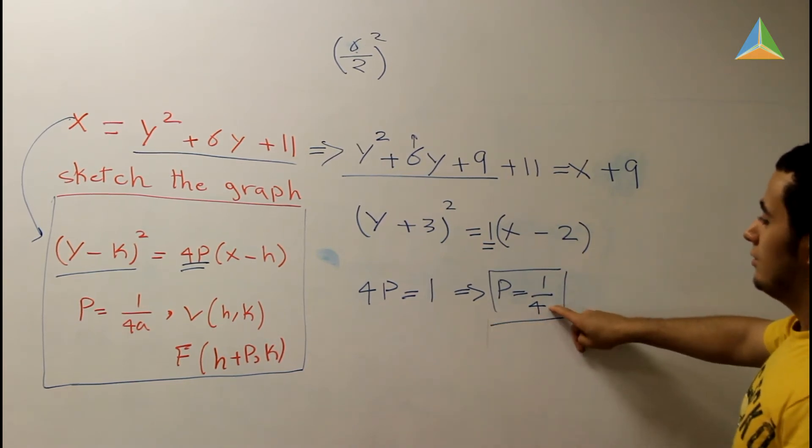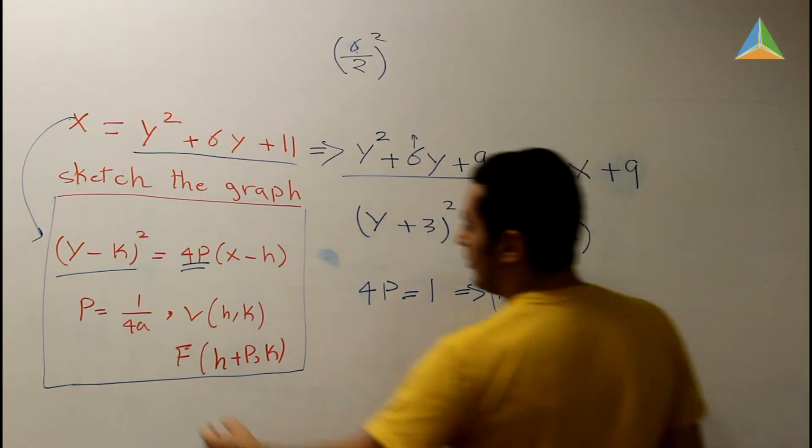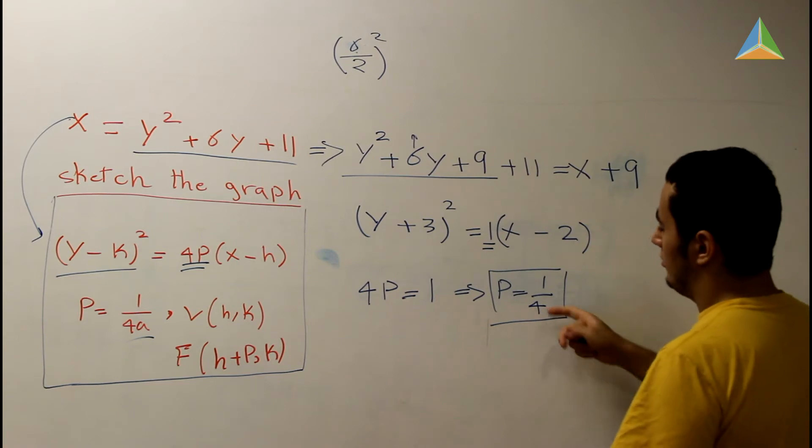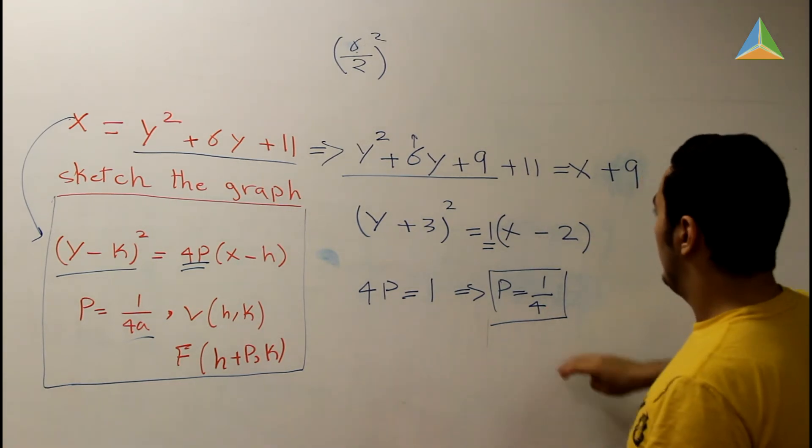Which means that a equals 1, because if you look here, 1/4a, and here is 1/4. That means a equals 1. We get the value of P.